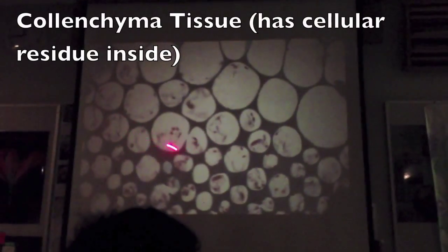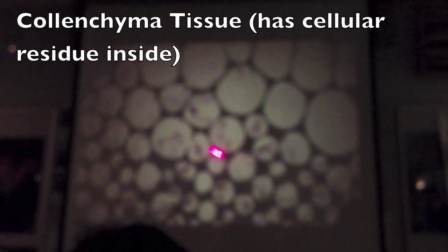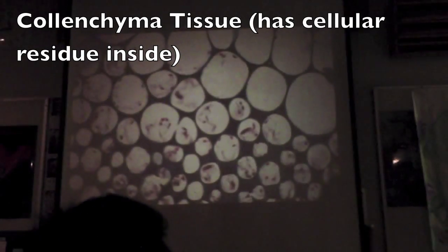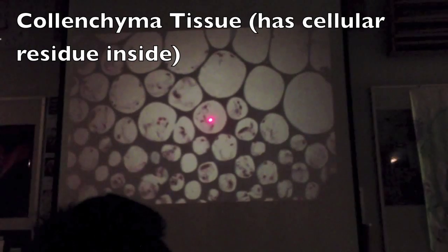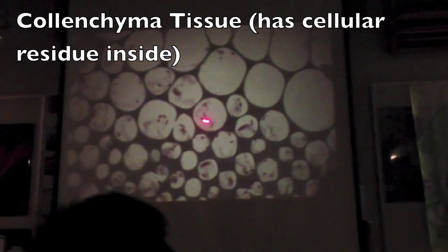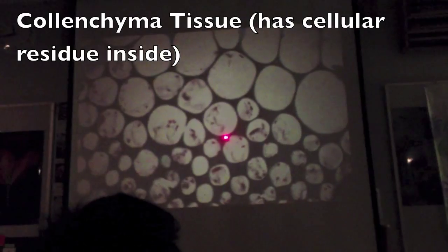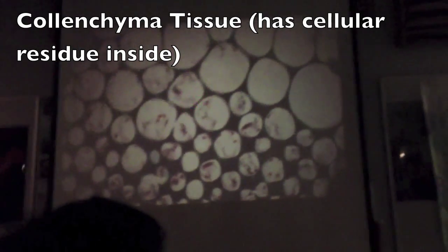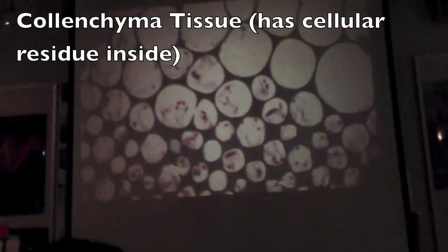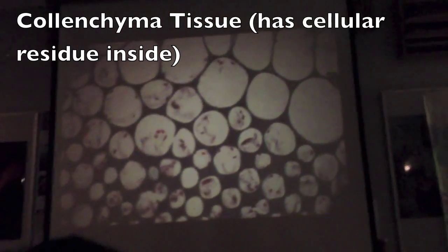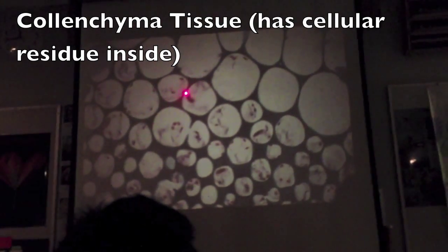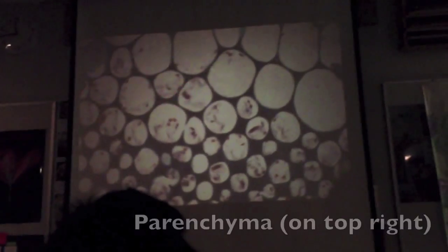What about this tissue? Is that in sclerenchyma? Nope — look inside. We've got cytoplasm, which means it's alive. We've got thick corners and thin areas. Collenchyma. Collenchyma has cellular residue inside — thick places and thin places in the cell wall.